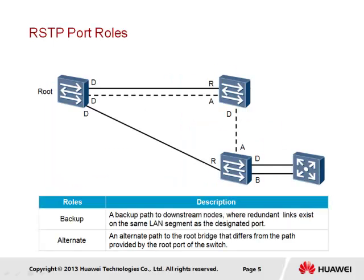The RSTP topology, in addition to the designated root and alternate ports, defines a fourth port role referred to as the backup port. The role of an alternate port is to represent a redundant path that leads back to the root bridge, whilst the backup port is assigned to represent a redundant path that leads away from the root bridge, such as in the case of a redundant link on a hub, that connects to what is referred to as a leaf node or end station.